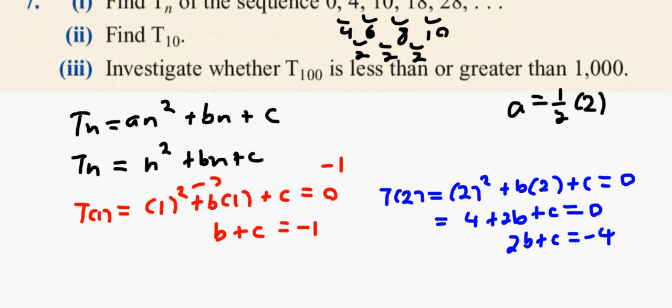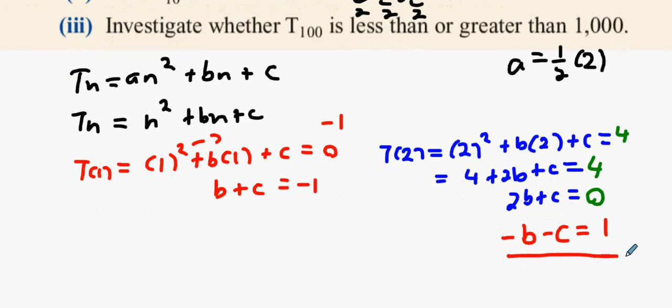Mel is perfectly right. T2 is 4, so this should have been 4. Then the 4 is cancelled, leaving 2B plus C equals 0. Now, I'm going to do the blue equation, take away the red equation. Minus B minus C equals 1. Then what do we get here? B equals 1.